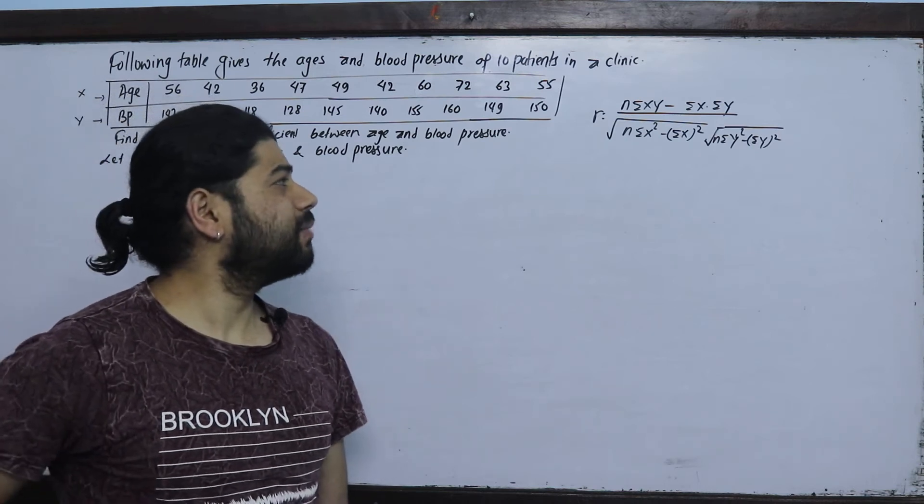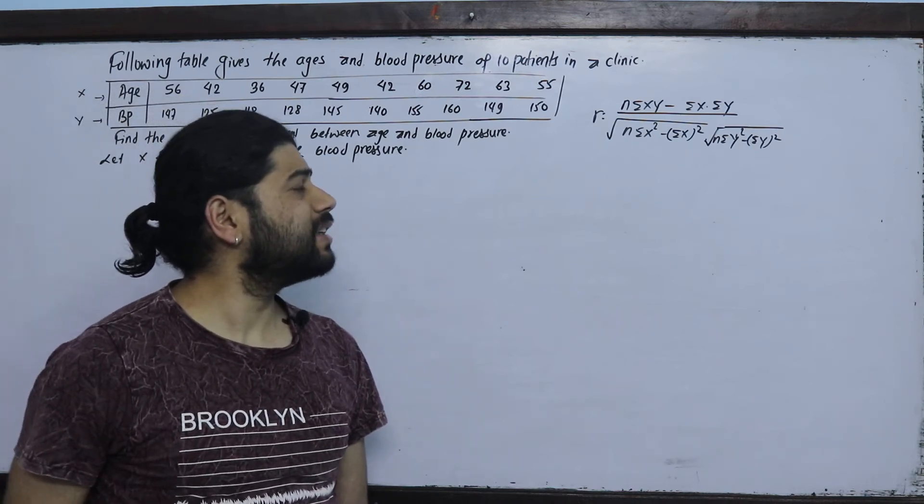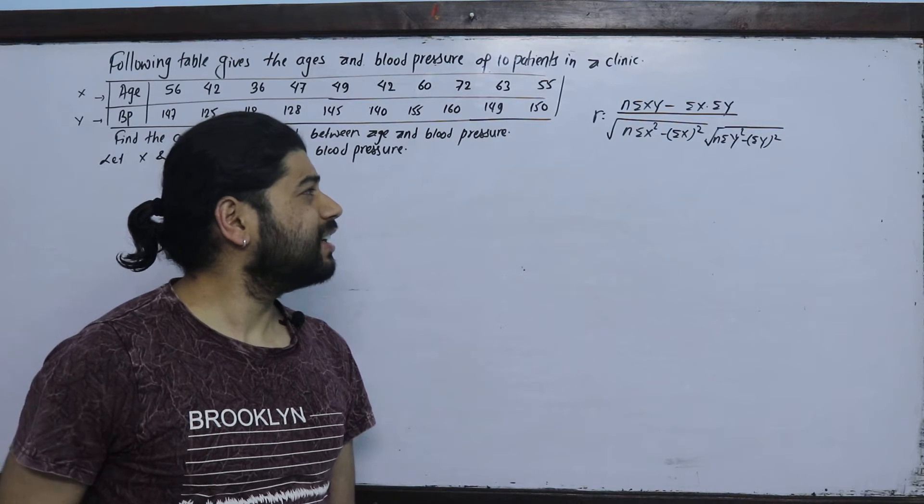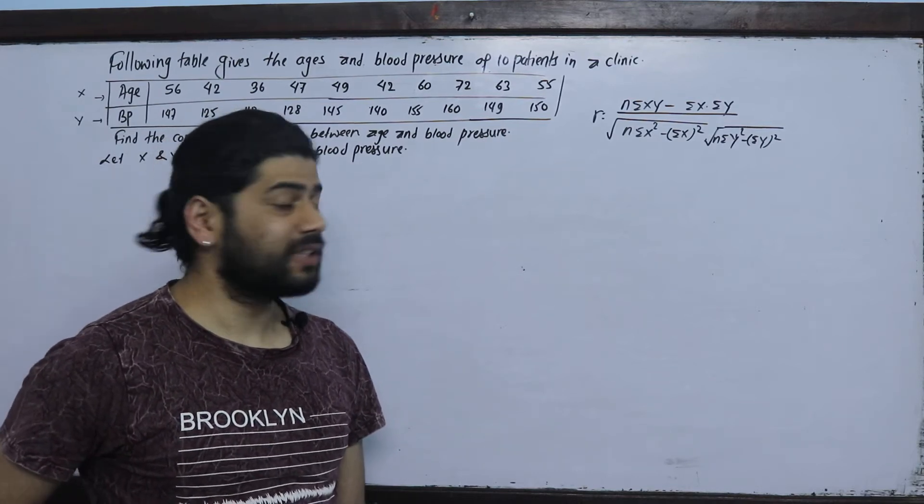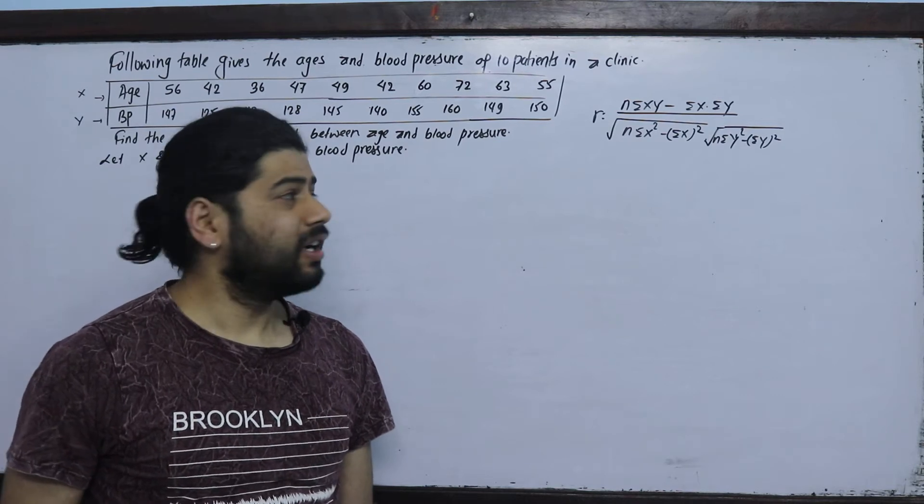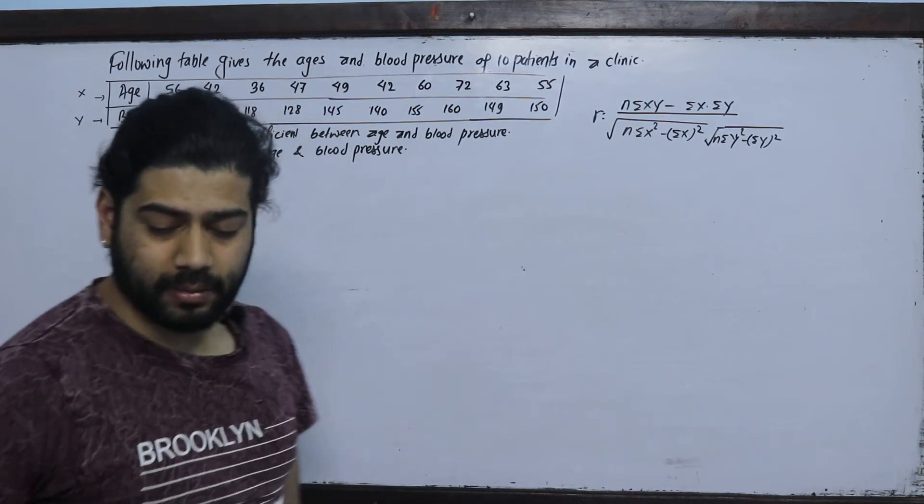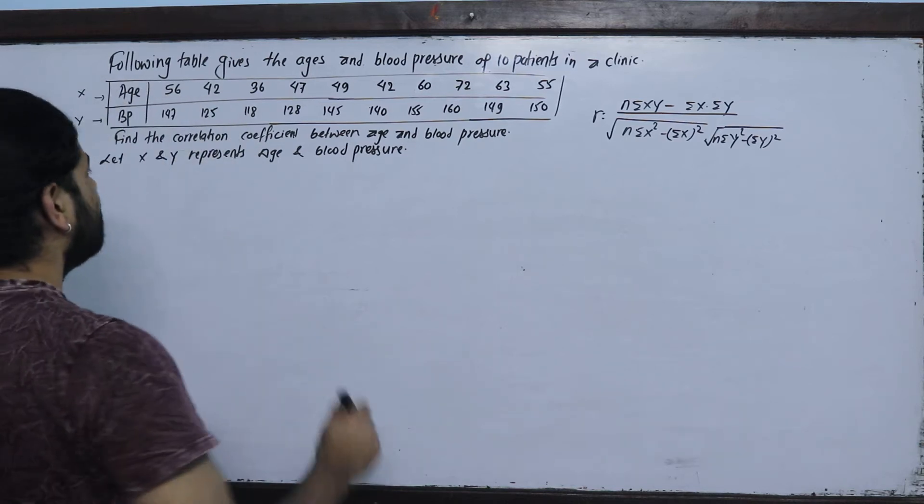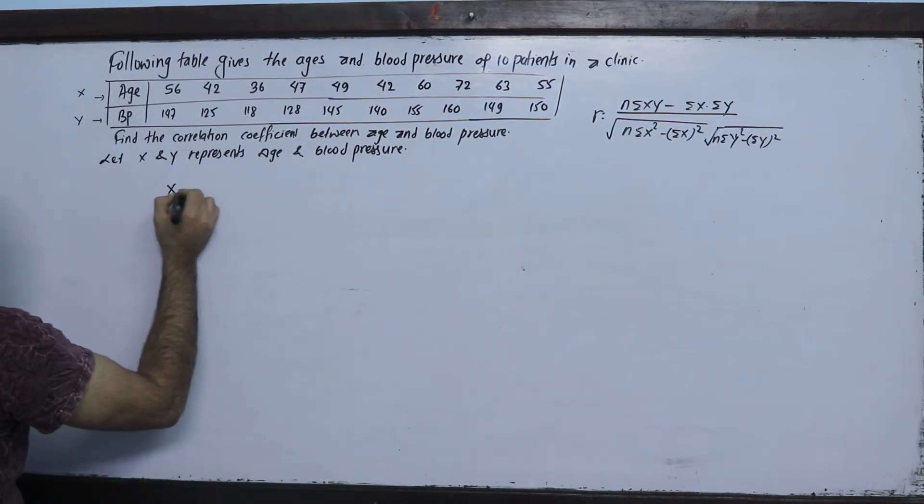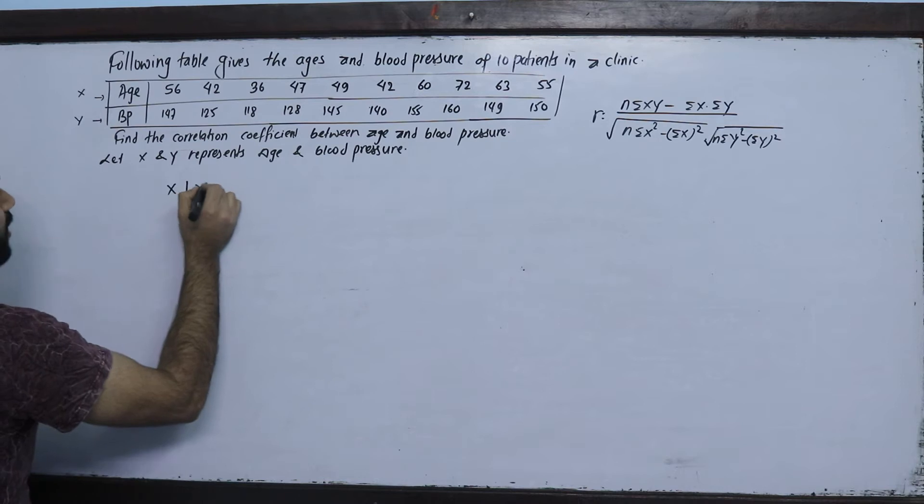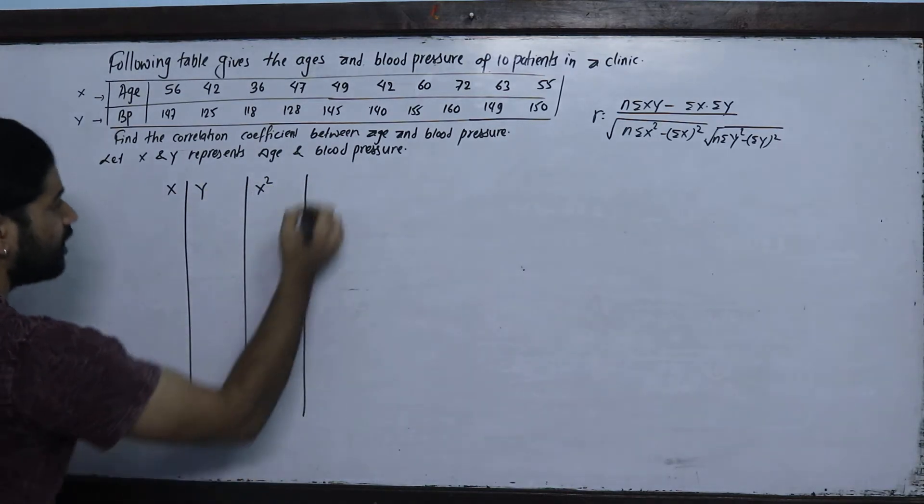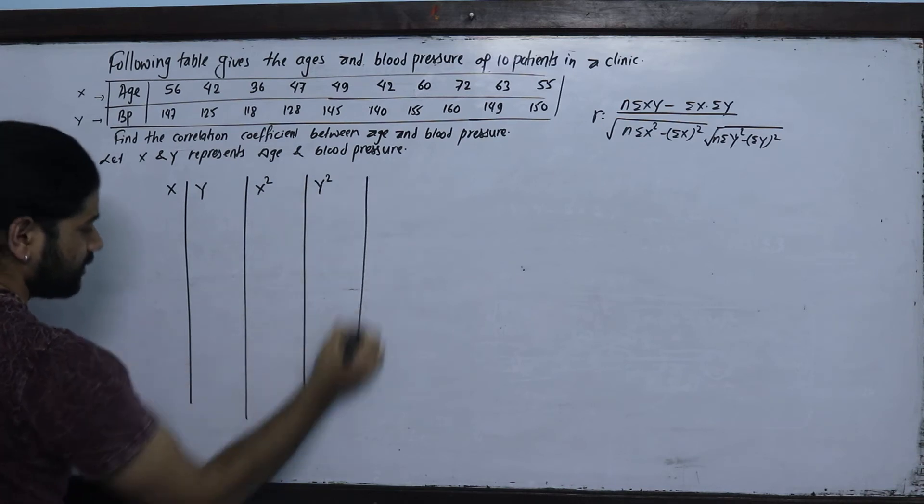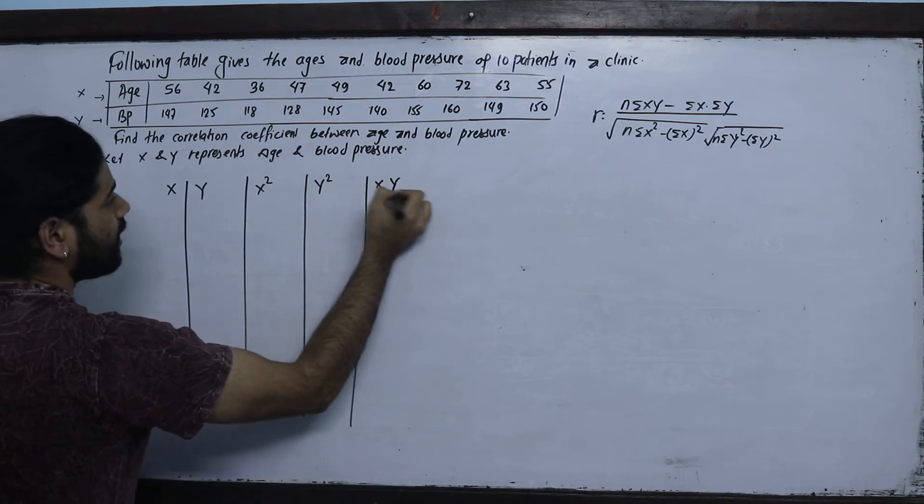So what do we need? We need summation x, summation y, summation x square, summation y square, and summation xy. Now we have to solve this. Let me set up the table with columns: x, y, x square, y square, and xy.